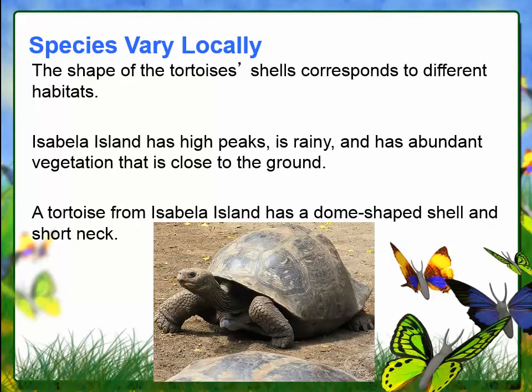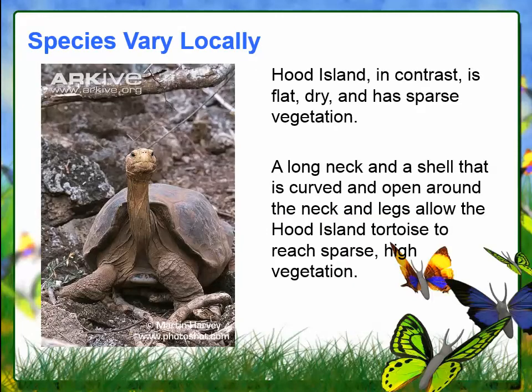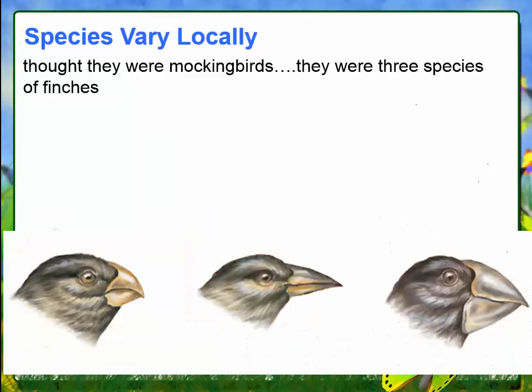Another way that species varied locally was with the tortoises. On Isabella Island, they had shorter necks and a dome-shaped shell because the vegetation was close to the ground. However, on Hood Island, which was in the same group of islands, they had long necks because the vegetation was up higher, allowing them to reach it. Also, there were three species of finches on the Galapagos with different beaks, which allowed them to eat different types of seeds and avoid direct competition with each other.